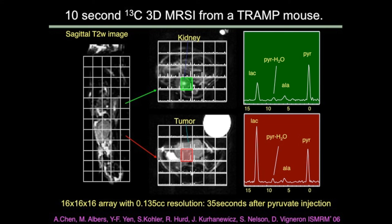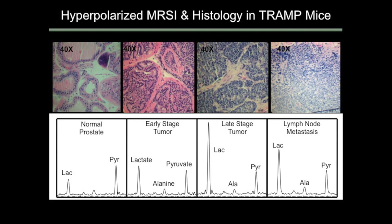This voxel is focused on the kidney — here's the pyruvate that was injected, and here's the amount of lactate formed in that particular organ. The pyruvate is higher than the lactate. When we go to the tumor, we see the opposite: the pyruvate is still pretty high because there's fairly good delivery, but a large amount is converted to lactate in the same timeframe. This was a 16-cubed array with roughly five-millimeter-on-a-side resolution, acquired 35 seconds after injecting the pyruvate. The ratio of lactate to pyruvate was very different between the normal tissue, progressing to early stage, and then late-stage metastatic tumor.